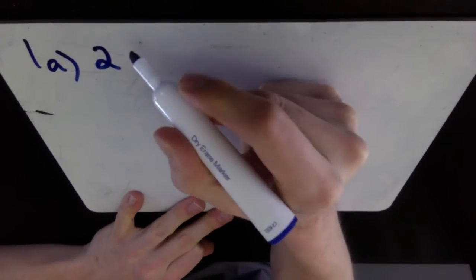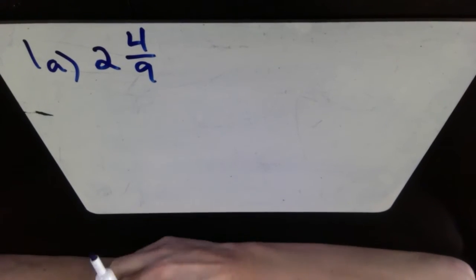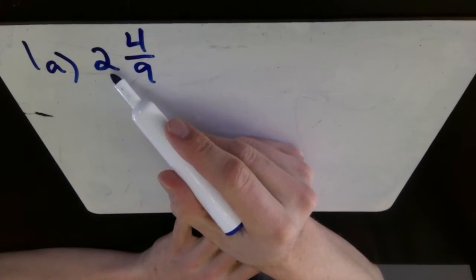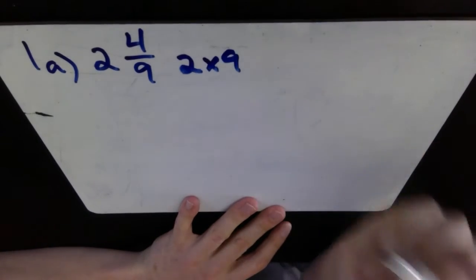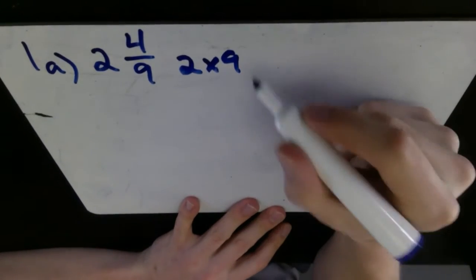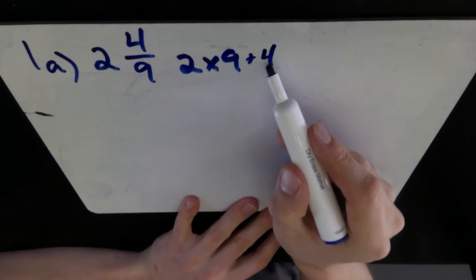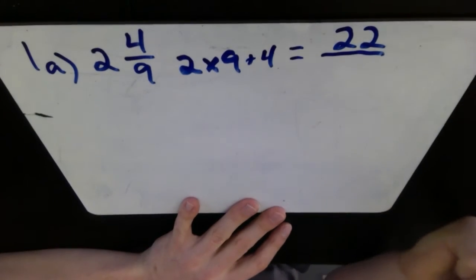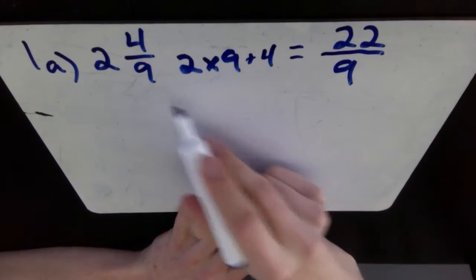We have 2 wholes and 4 over 9. Going back to last week on Wednesday with how to do this question, I'm going to use the method that we've used earlier this year as well, and that's using multiplication and addition. We need to start by looking at our 2 wholes and multiplying that by our denominator 9. So 2 multiplied by 9 and then adding our numerator, which is 4.